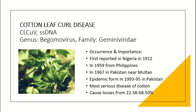Cotton leaf curl disease — history. It was first reported in Nigeria in 1912, and from the Philippines it was reported in 1959. In Pakistan it was reported in 1967 near Multan. In the 1990s there was an epidemic in Pakistan. This is considered the most serious disease of cotton, causing up to 22 to 68% losses in cotton yield.